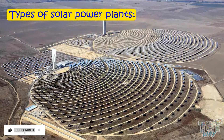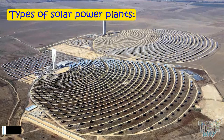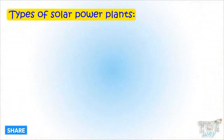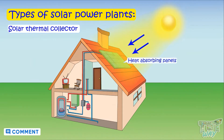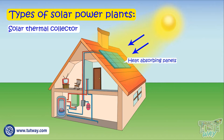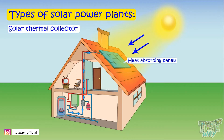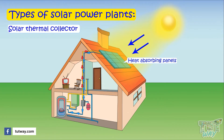There is one more way of using solar energy. Solar thermal collectors use heat-absorbing panels and a series of attached circulation tubes that carry water. This water is heated and then supplied to buildings for domestic use.